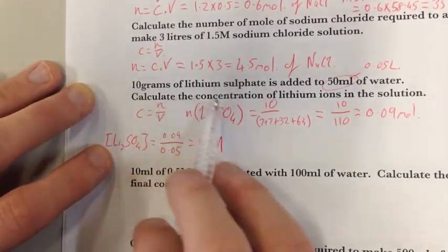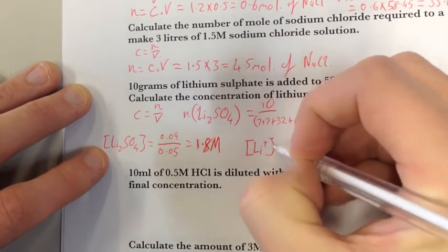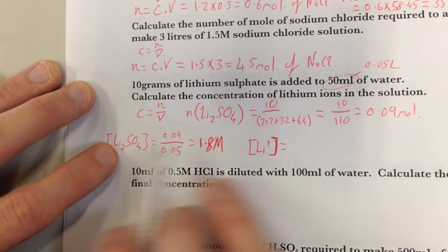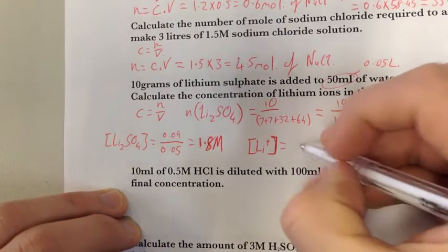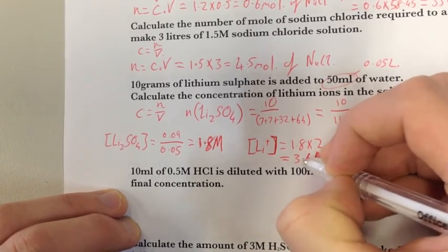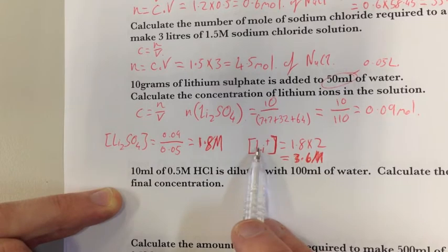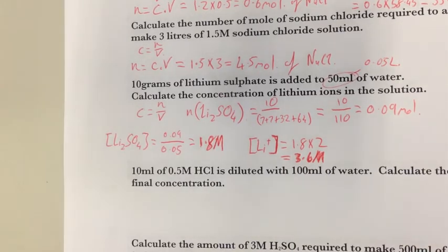But if I read the question, it says calculate the concentration of lithium ions, not lithium sulfate — lithium ions. In my molecule Li₂SO₄, I've got two lithium ions. Once it's in solution, this will break apart into two. So I go 1.8 times 2 equals 3.6 molar of actual lithium ions. The concentration of lithium ions is 3.6 molar. Hopefully that makes sense. This will be the end of this video, and the next video you will look at is on dilutions.